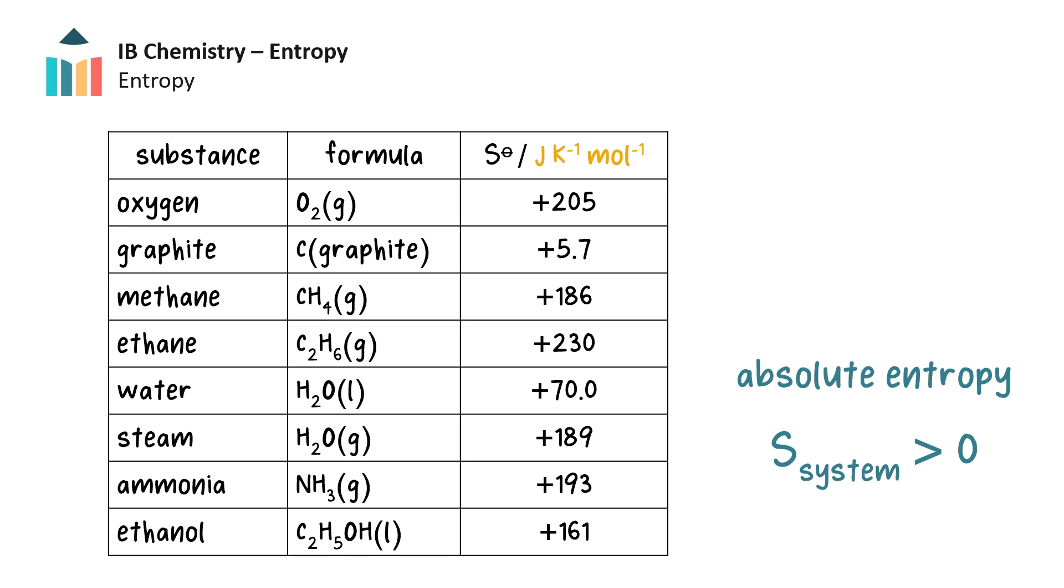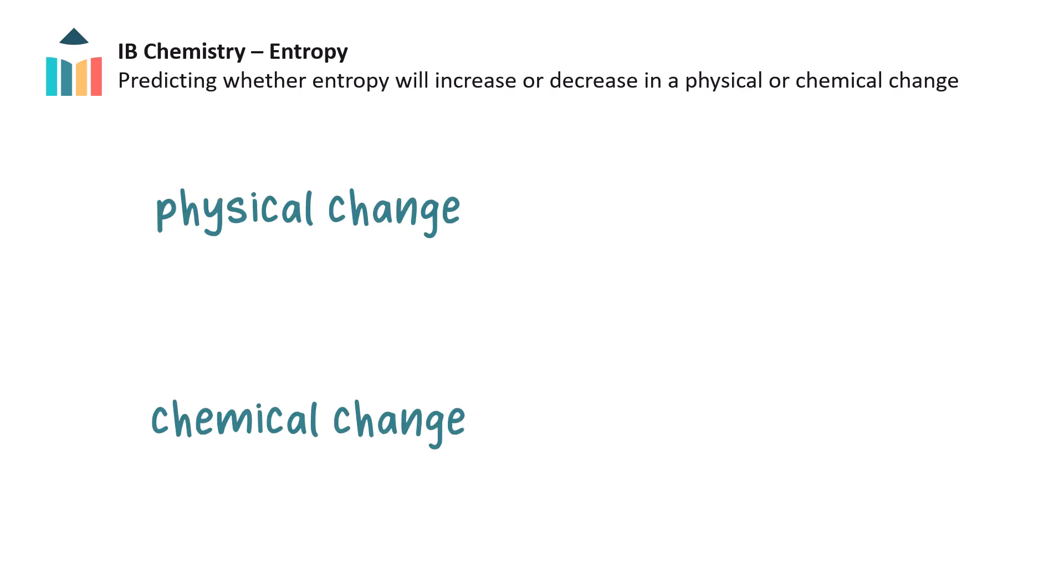Now that we know about the entropy of solids, liquids and gases, let's investigate the entropy change of a system in physical and chemical changes. All physical and chemical changes are accompanied by entropy changes. The change in entropy of the system is given by the difference in the entropy after and before the change. We can simplify the entropy change of a system by writing only delta S.